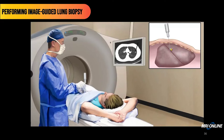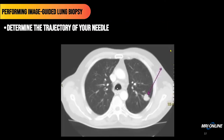If the needle were to cross the fissure, we would be violating not only one but two pleural surfaces — visceral and parietal — and also another visceral pleura, therefore increasing the risk of pneumothorax. One of the most important things to understand is what trajectory the needle will assume as it moves through the lung and into the lesion of interest.